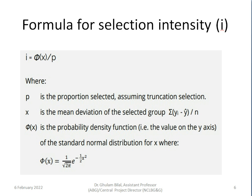The formula for calculating intensity is i = φ(x) / p, where p is the proportion selected, x is the mean deviation of the selected group, and φ(x) is the probability density function for the standard normal distribution. You do not need to learn this derivation — what we need to know is the proportion of animals used for selection, and the corresponding intensity values can be obtained from a table.